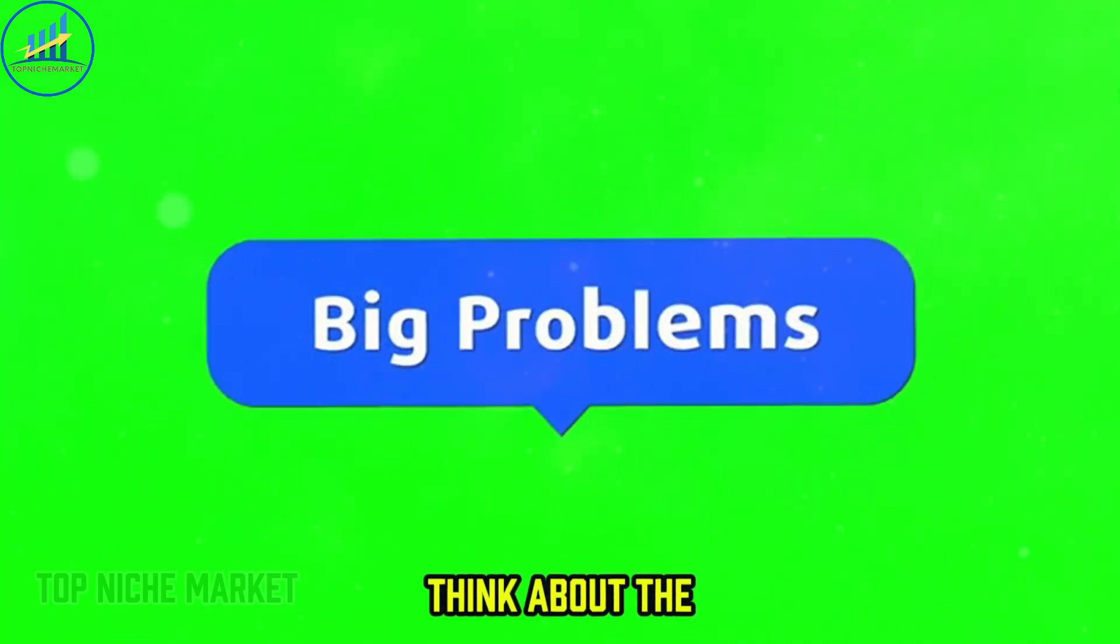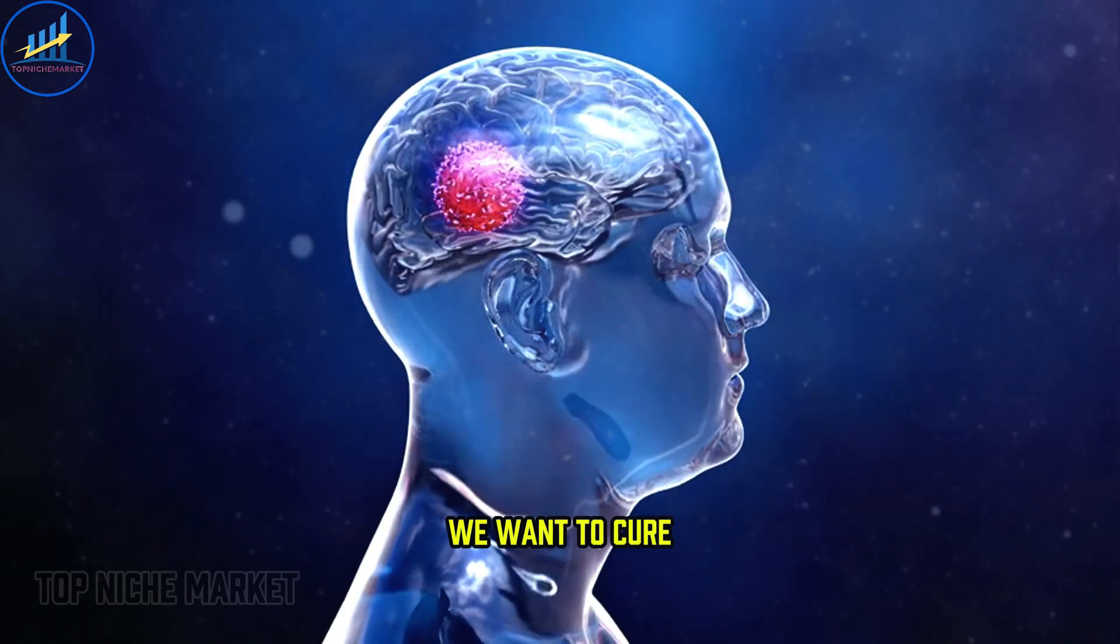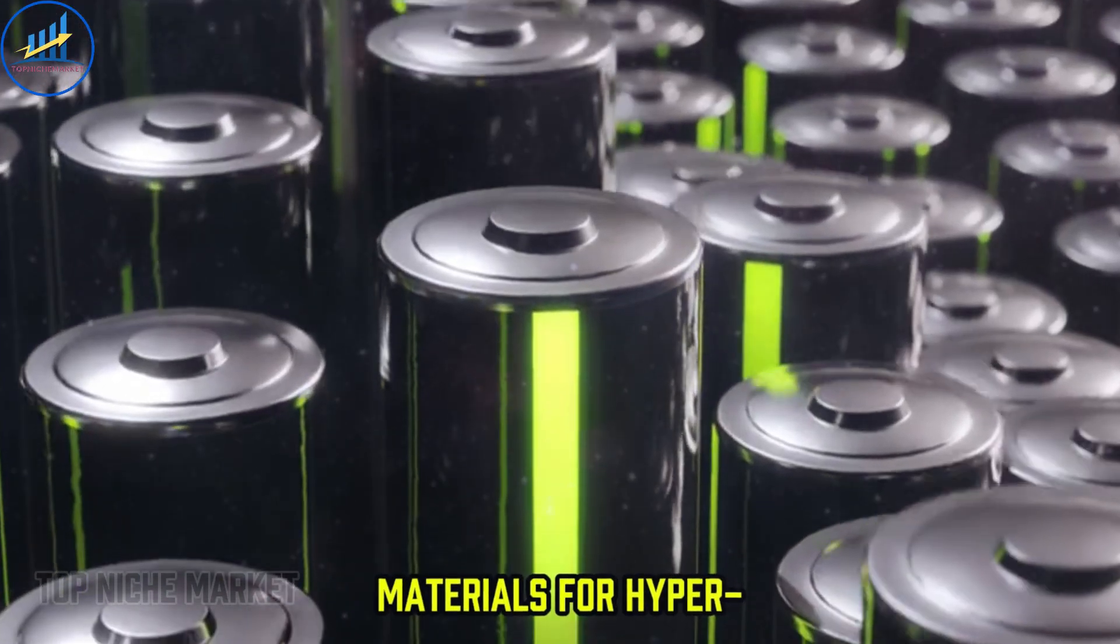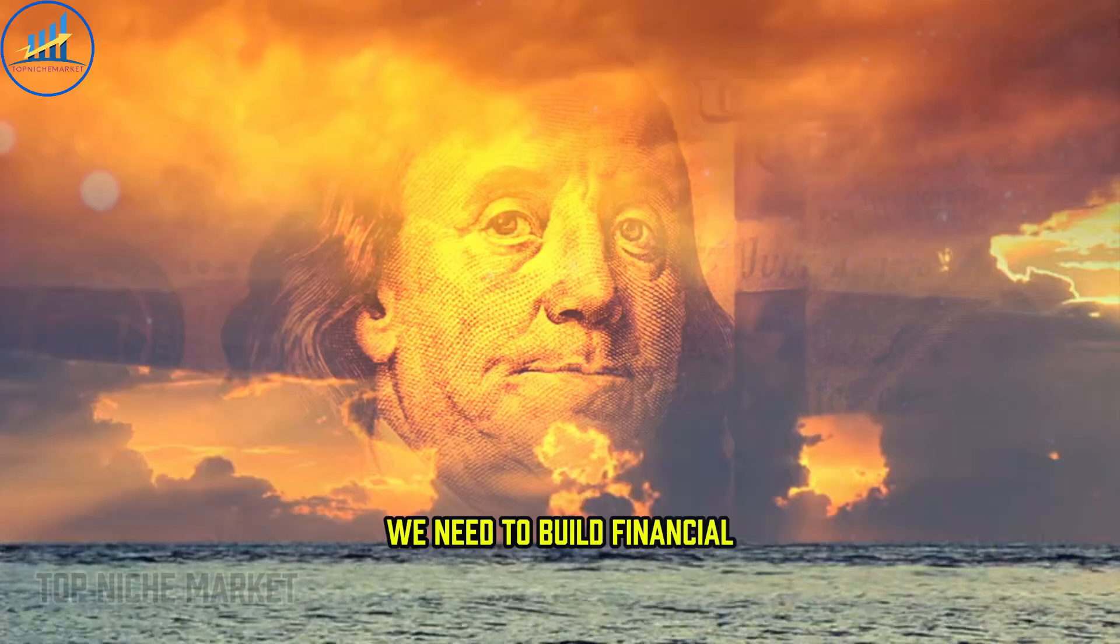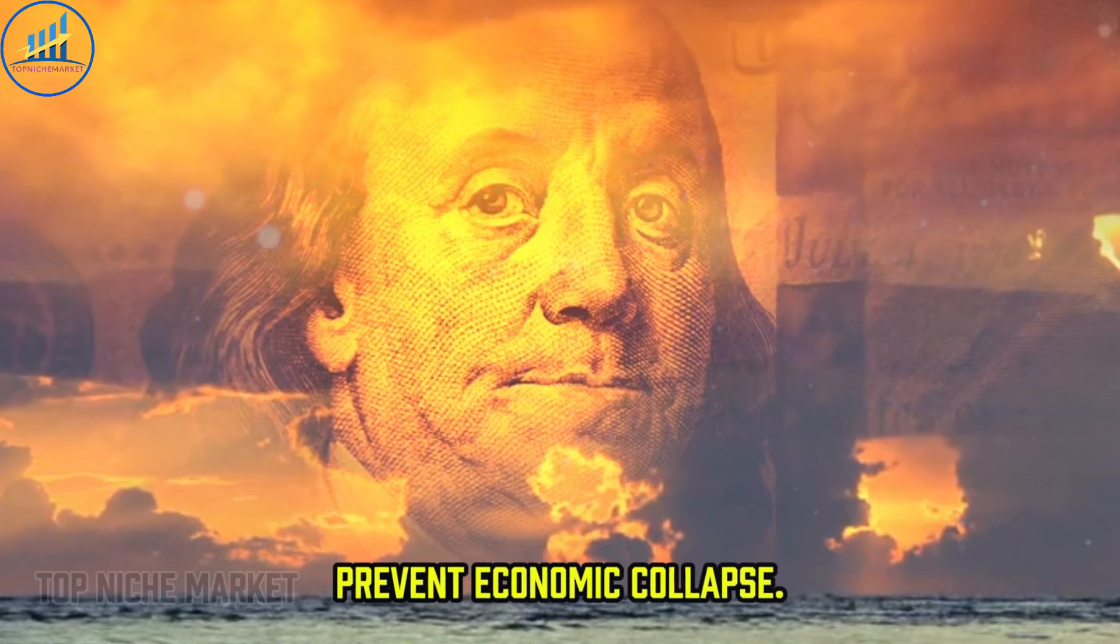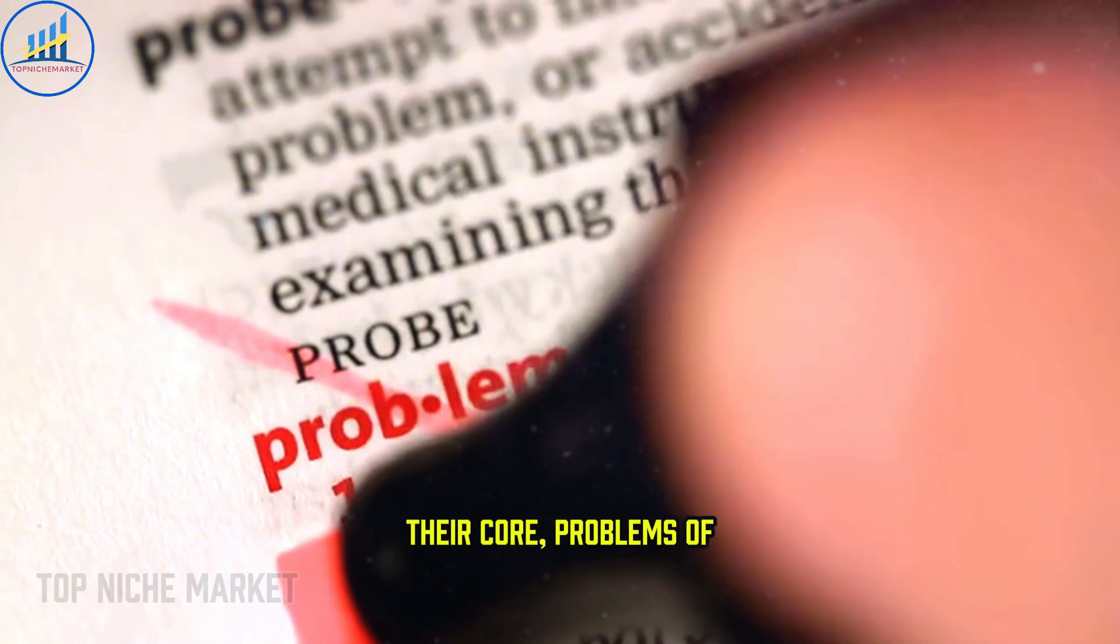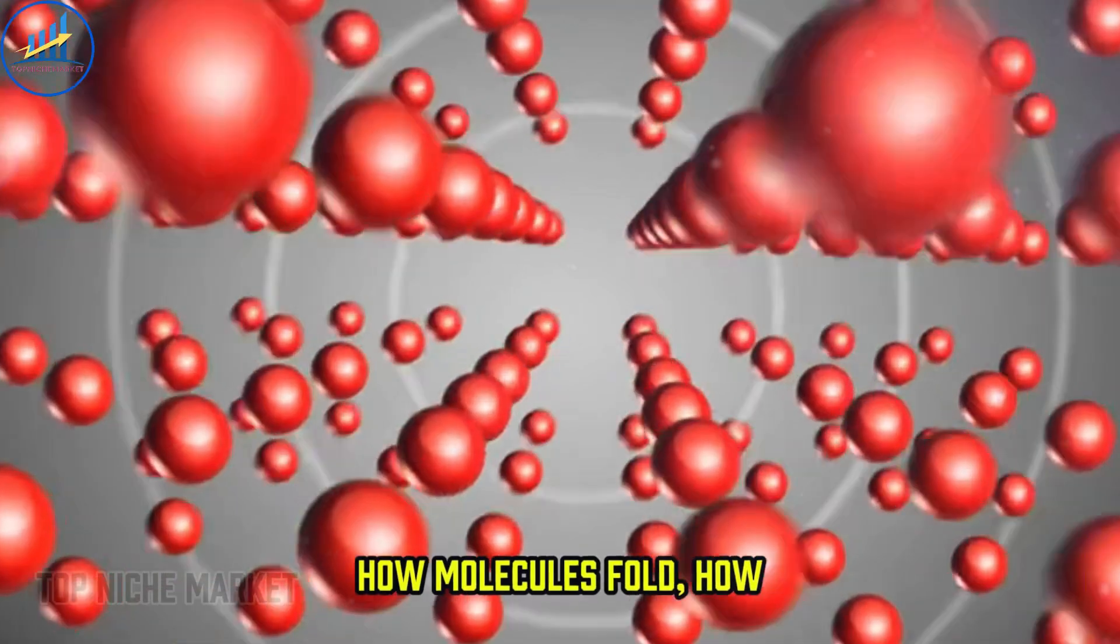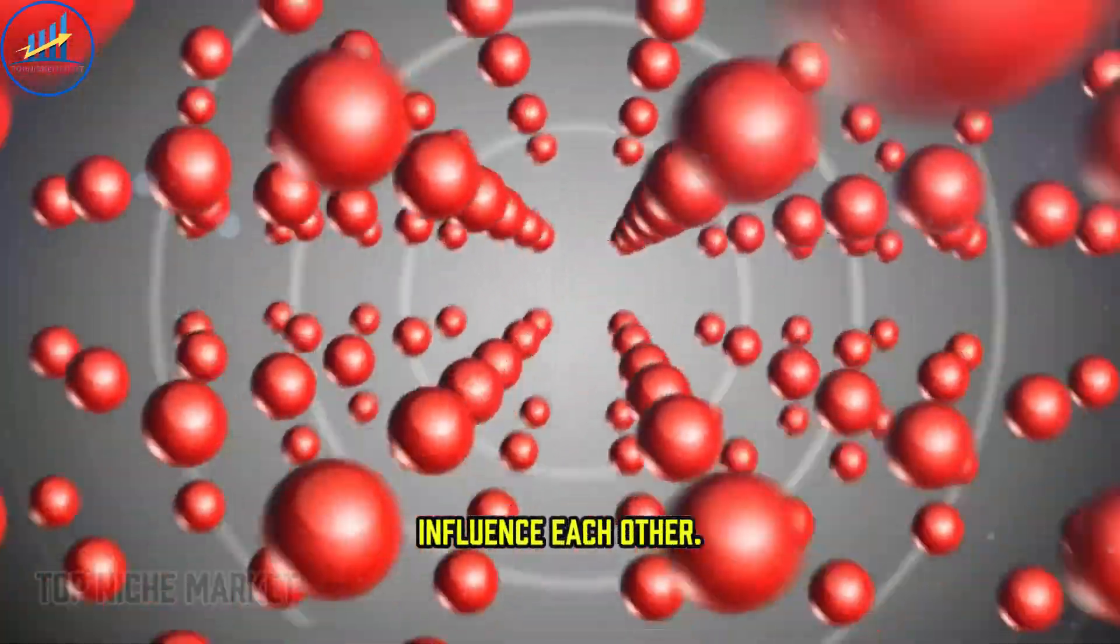Think about the biggest, gnarliest problems facing our species. We want to cure diseases like Alzheimer's and cancer. We need to design new materials for hyper-efficient batteries to combat climate change. We need to build financial models that can predict and prevent economic collapse. These problems are all, at their core, problems of staggering complexity. They involve simulating how molecules fold, how atoms interact, or how millions of variables influence each other.